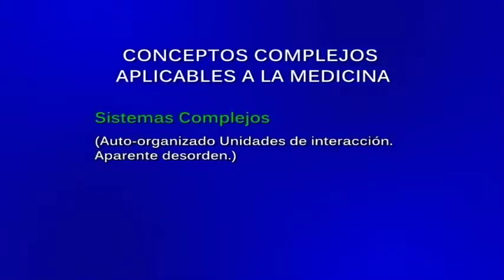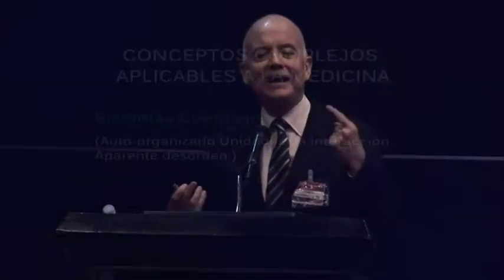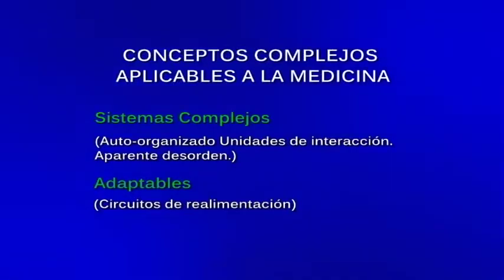¿Cuáles son los conceptos de la complejidad aplicables a la investigación médica? Los sistemas complejos son autoorganizados, unidades en interacción de manera no lineal. Nuestro principal sistema de regulación interna y de adaptación al medio ambiente —el sistema nervioso autónomo— es un sistema adaptable complejo que, a través de circuitos de realimentación positivos y negativos, se está constantemente adaptando al medio ambiente. Pero la pregunta importante es: si se está intentando adaptar a un medio ambiente degradado, ¿qué sucede? Viene la enfermedad.